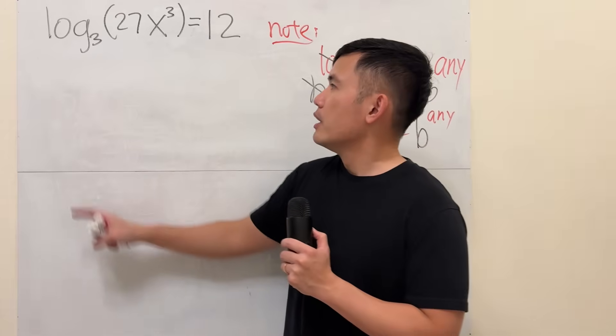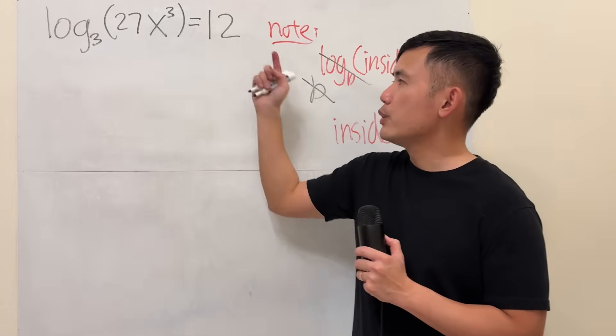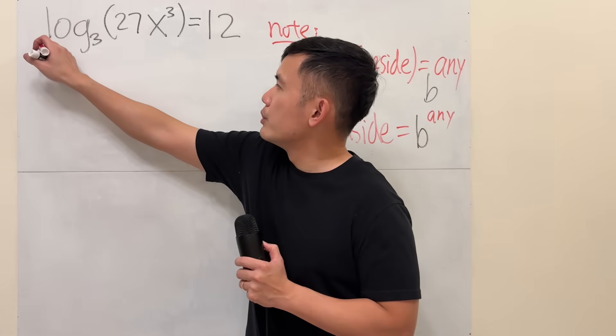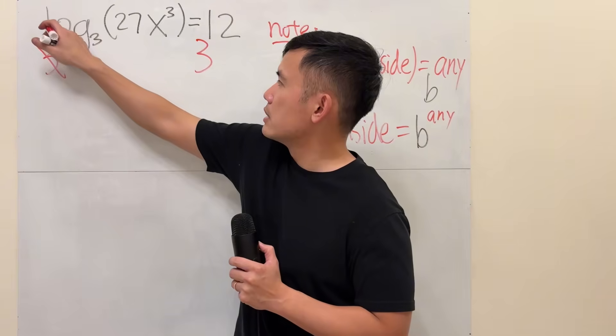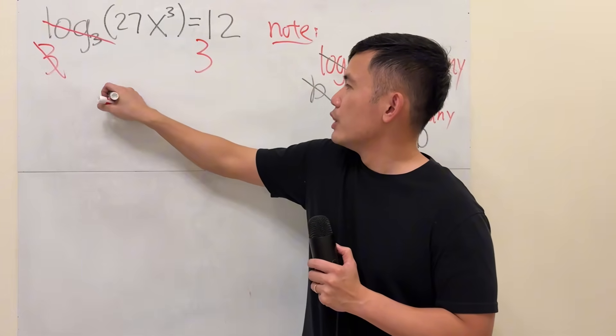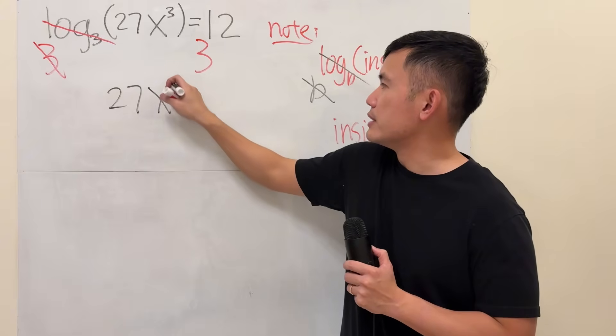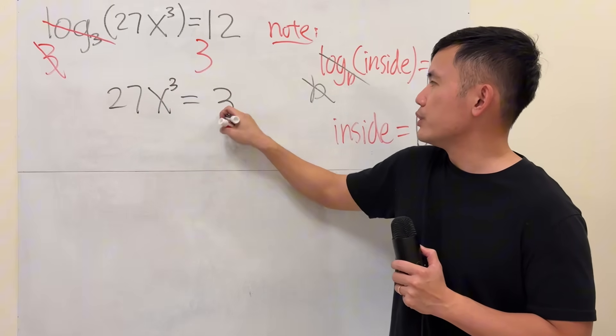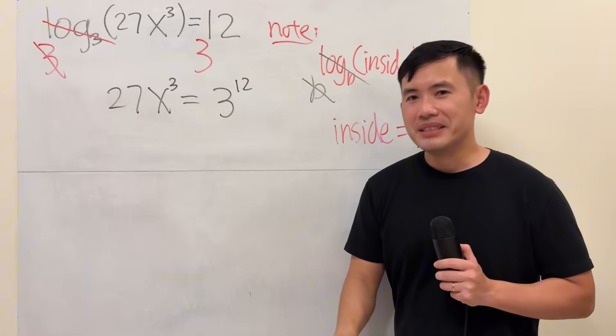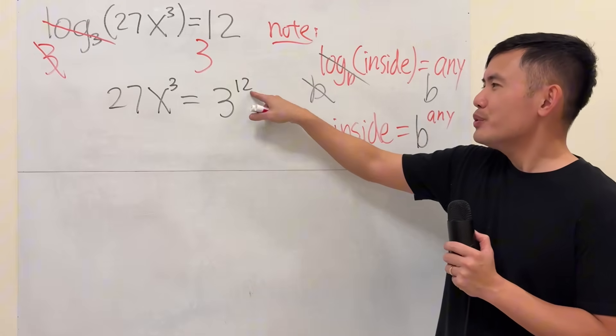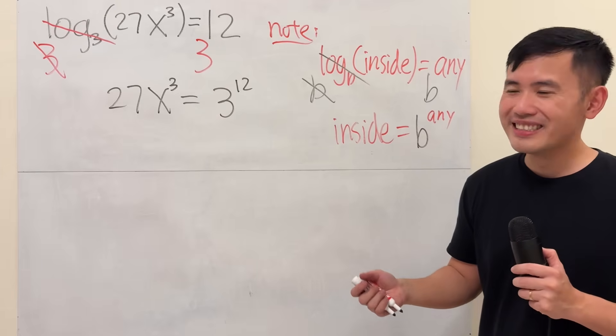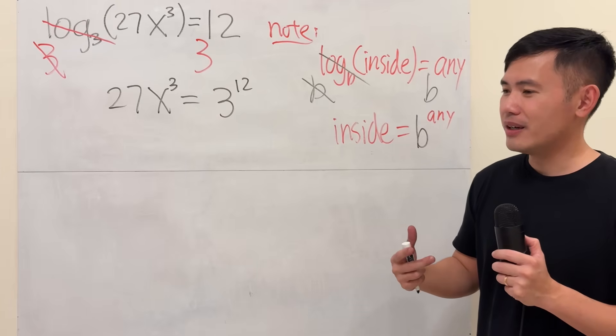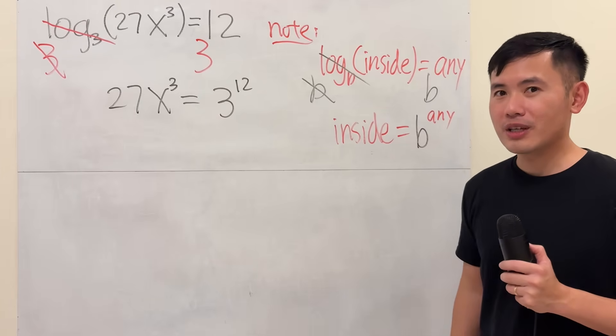So here we go. We have log base 3 of this, it's equal to 12. I'm going to do 3 to this power, and do the same thing here. So that we can cancel out this and that. And we get 27x to the 3rd power, it's equal to 3 to the 12th power. Now as you can see, 3 to the 12th power is a pretty big number, so I'm actually not going to work that out, because that is actually going to be too much computation.